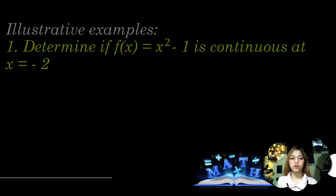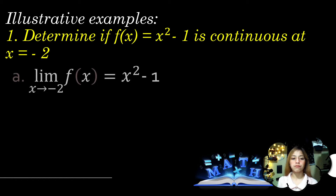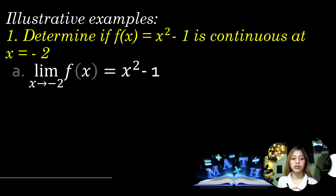For example, number 1: determine if the function x² - 1 is continuous at x = -2. First, let's check the first condition by finding the limit of the given function. In this function, we will follow four limit laws.